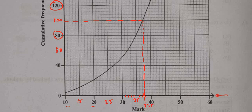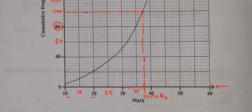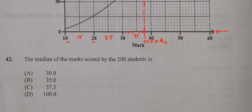37.5, and that is our Q2, second quarter or two quarters is a half, right? That's the median, 37.5. Answer is C.